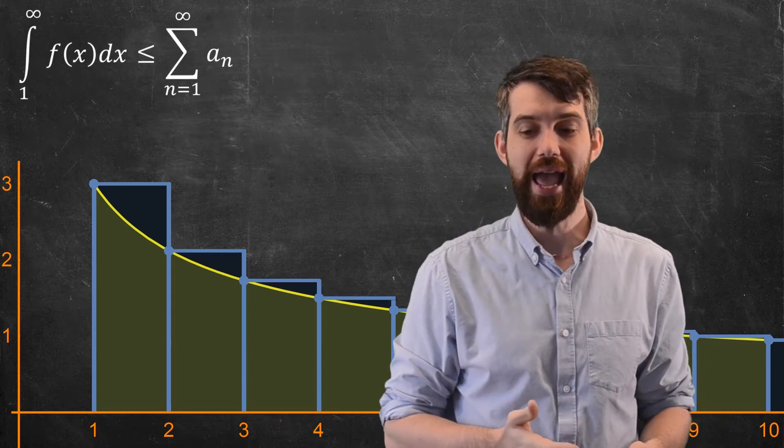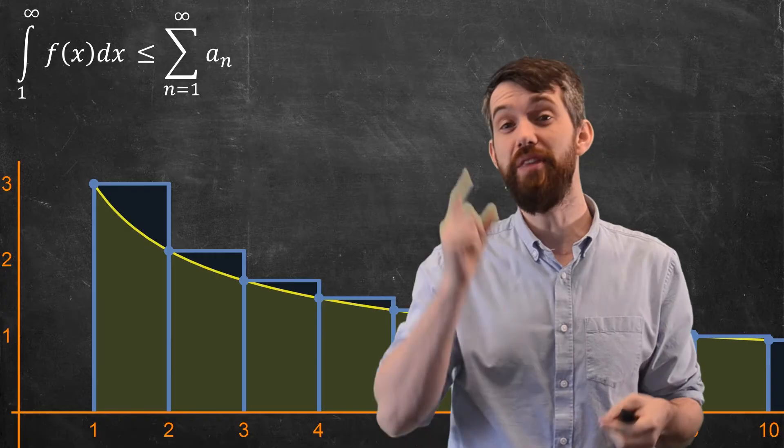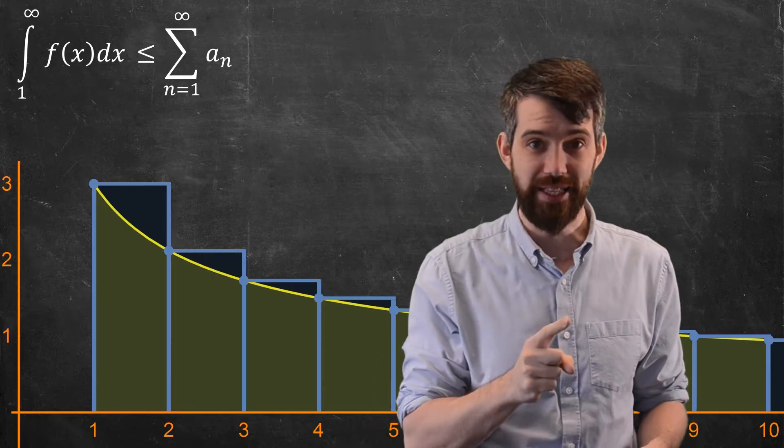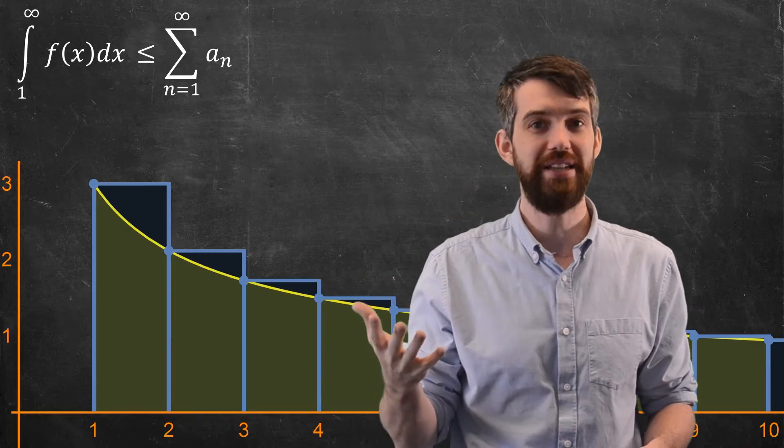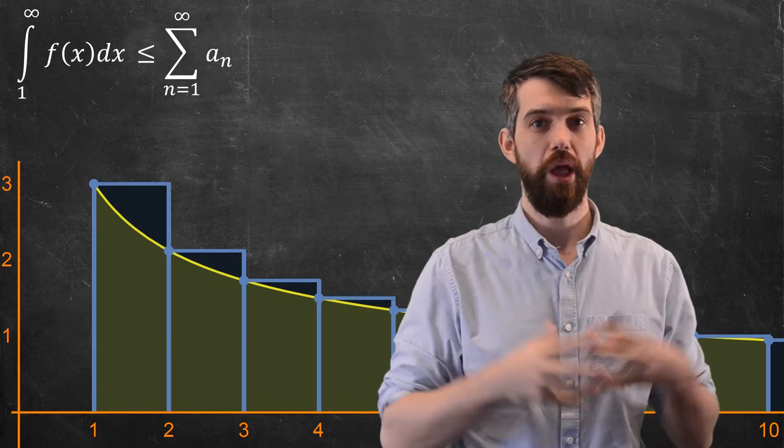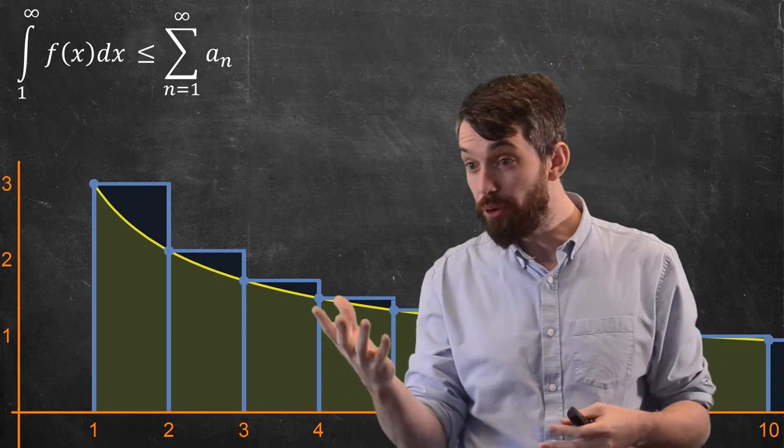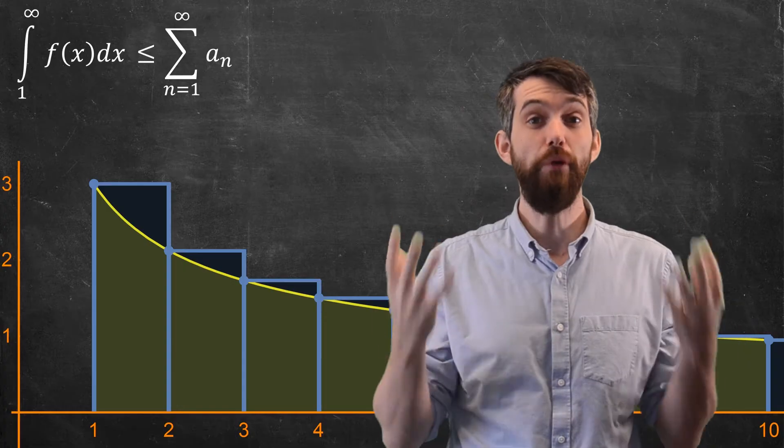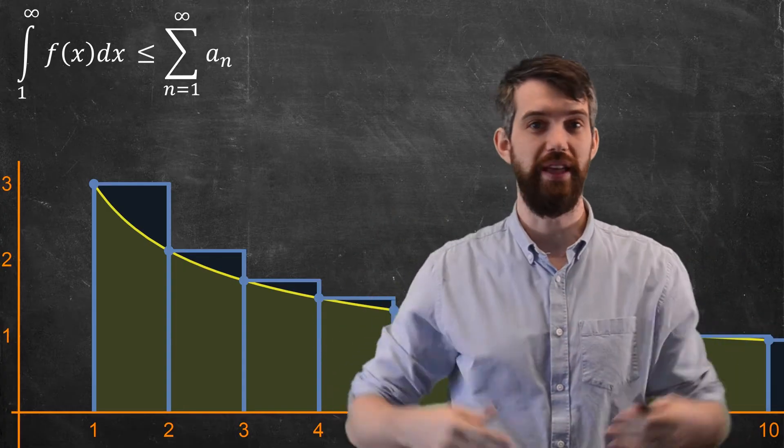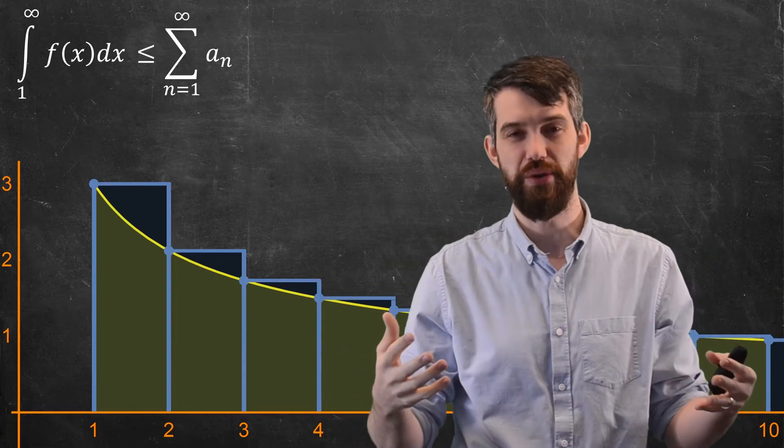So in this example, what we have is a relationship. We say that the improper integral is strictly less than the area of all the rectangles, strictly less than the series. Now, both of these things I'm comparing, the improper integral and the infinite series, both of them trundle off to infinity. They take either x going to infinity or n going to infinity.